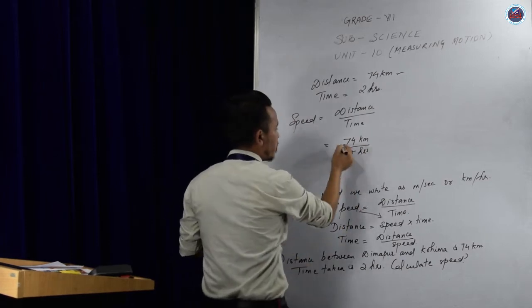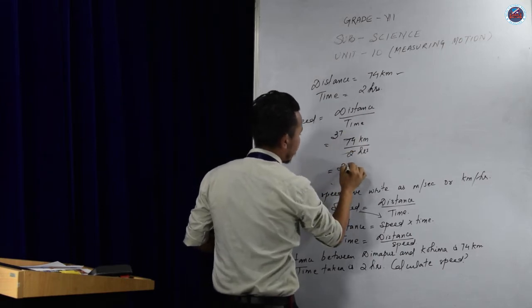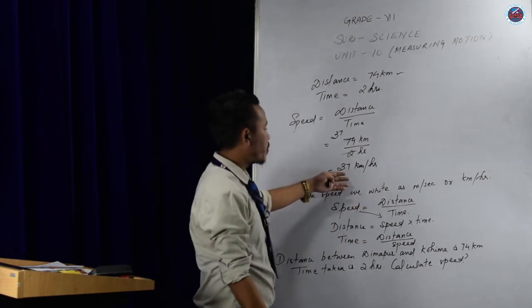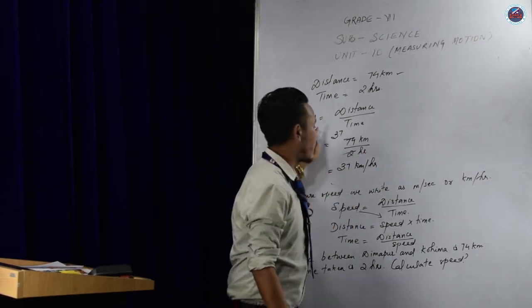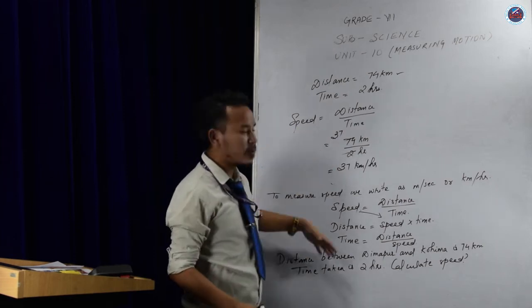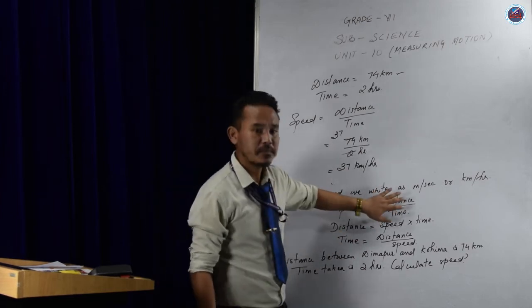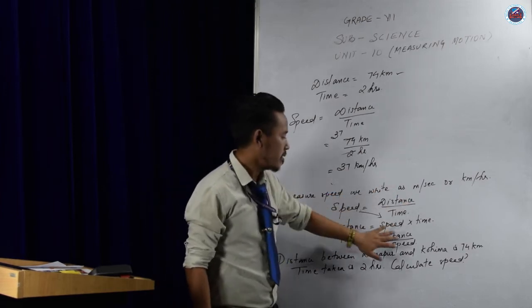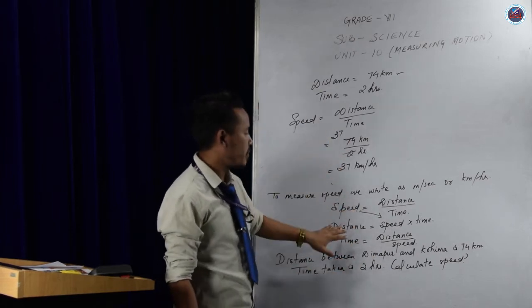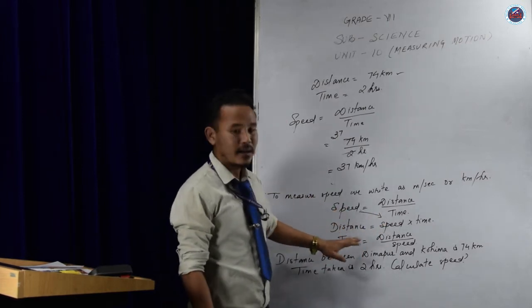Distance we have as 74 kilometers and time is given as two hours. We can cancel out these two to 36 and 27, 14. So, we get the speed as 37 kilometers per hour. So, this way, using this small formula, we are able to find out or calculate the speed. As well as in the same manner, we can also calculate the distance provided we have the unit or provided we have the timings, the distance, time and speed. Using all those three, we can calculate either speed, distance and time.